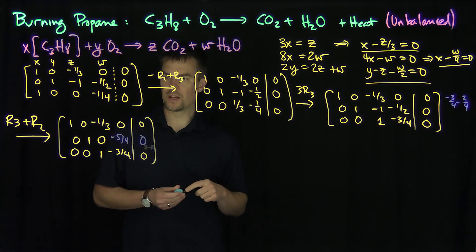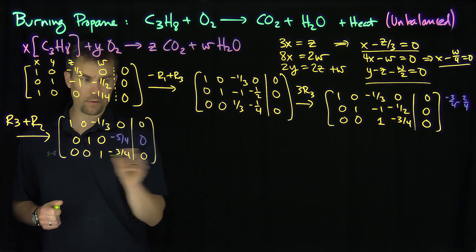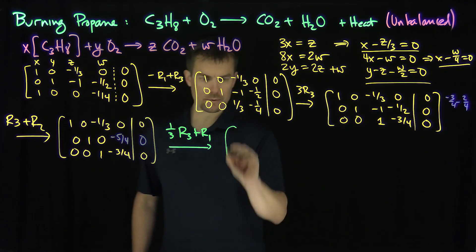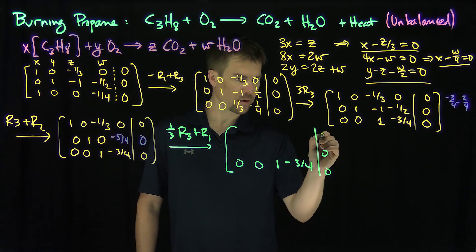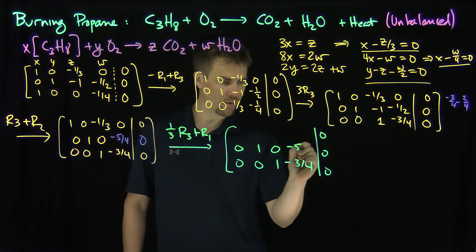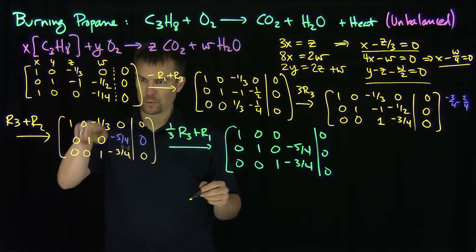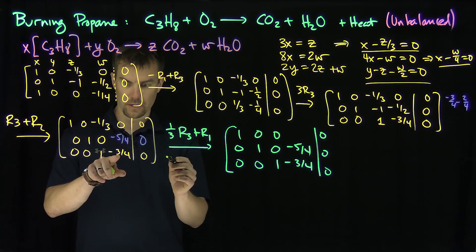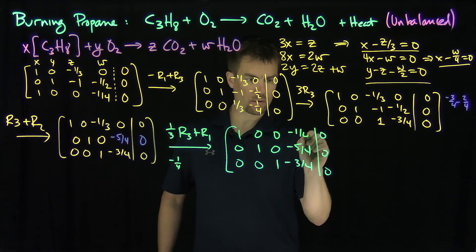Finally, I perform one-third of row 3 plus row 1 to eliminate the Z entry in row 1. Rows 2 and 3 stay the same. For row 1: the Z entry gets one-third of negative three-quarters added, giving a coefficient of negative one-quarter for W, and the Z entry becomes 0. So the updated row 1 is: 1, 0, 0, negative one-quarter, 0.